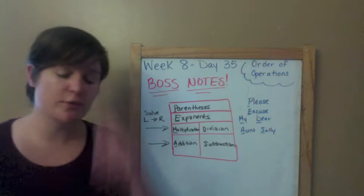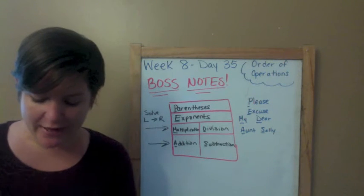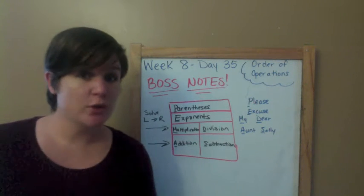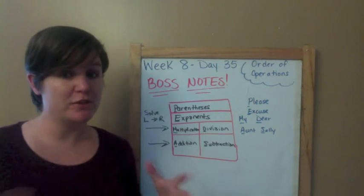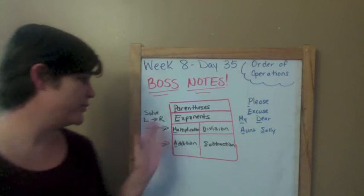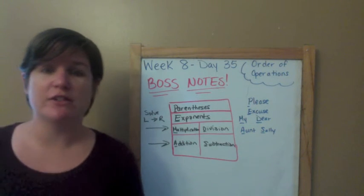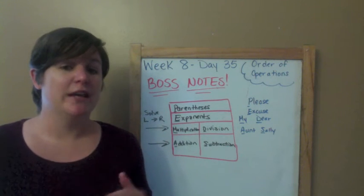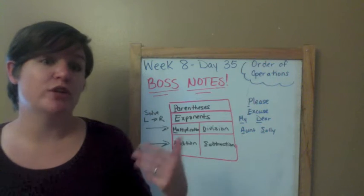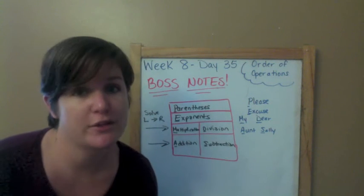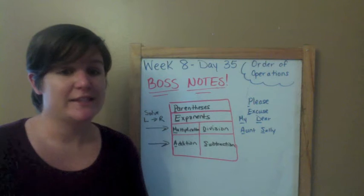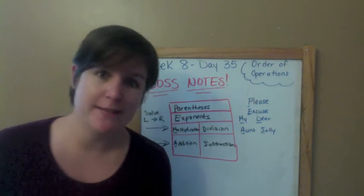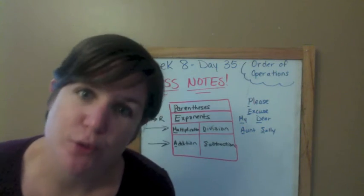Solve from left to right when you see those. So why do we have a whole system for order of operations? I'm about to show you several problems that have a bunch of different operations — parentheses, multiplication and division symbols, addition and subtraction symbols — and you have to know the order that you solve them. If you don't know the order, that will change your answer and get you a wrong answer, and we don't want that. So let's put these boss notes into practice in the learn it and practice it section.